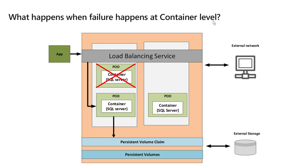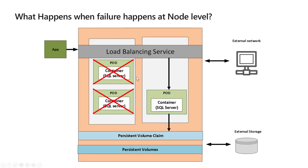What happens when failure happens at the container level? If one of the pods crashes and the container inside it is gone, Kubernetes immediately recreates that pod and connects to the persistent volume so that the newly created pod can start using the same data that was saved before the crash. What happens when failure happens at the node level? If a node completely fails - meaning all pods and all containers running in that node are gone - then immediately Kubernetes will create another node, create another pod inside it, and start working by connecting to the persistent volume.